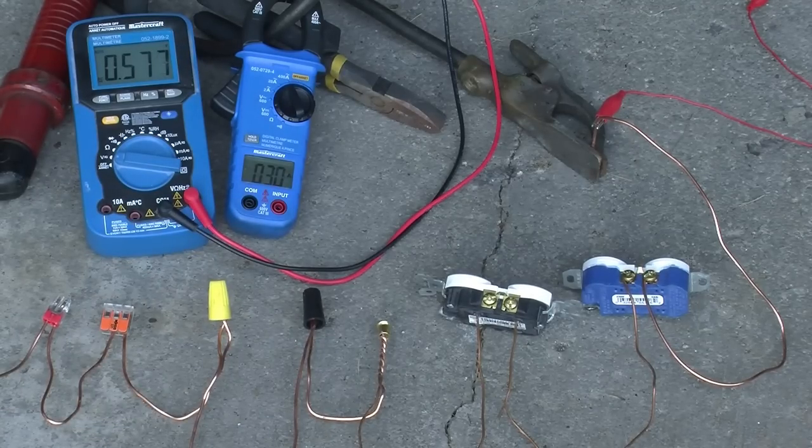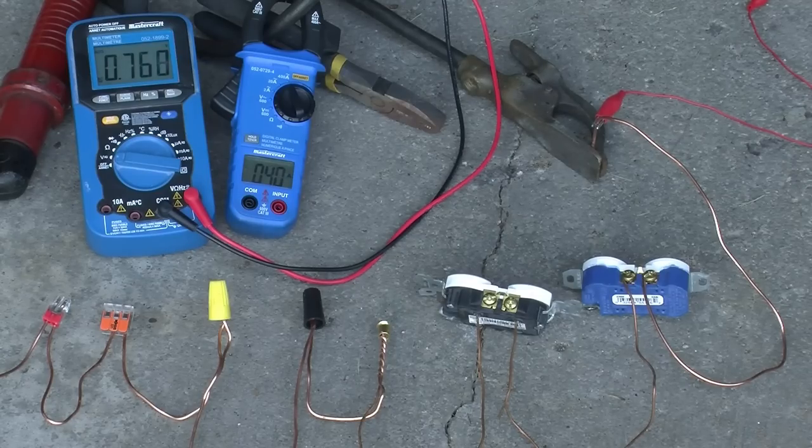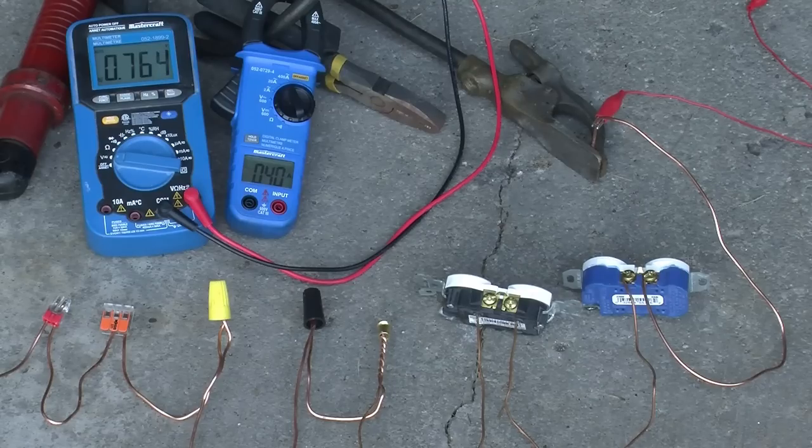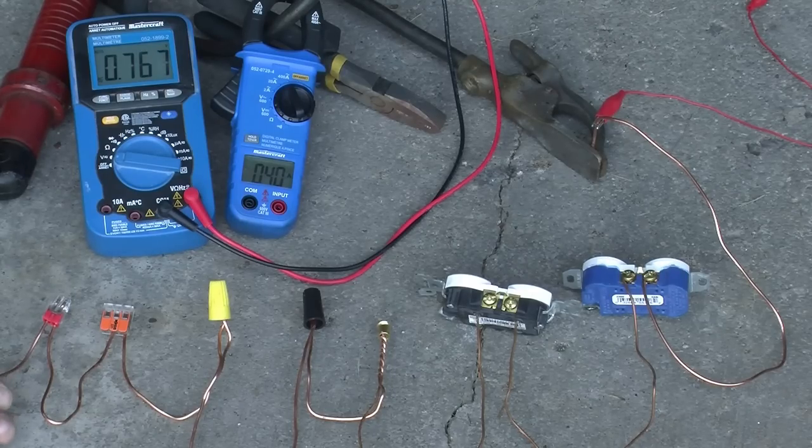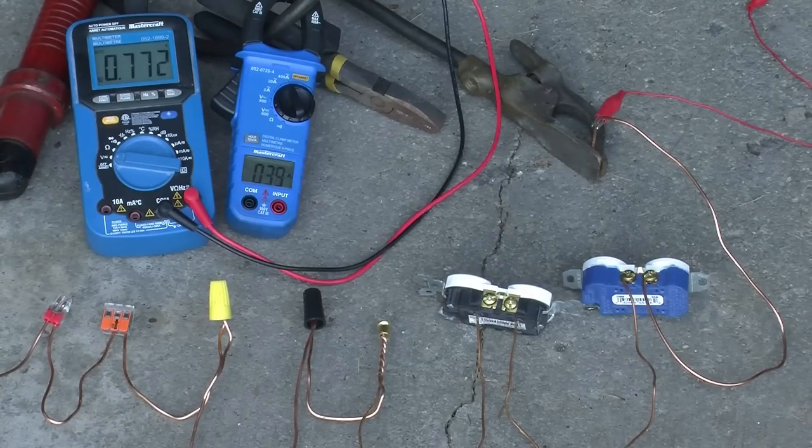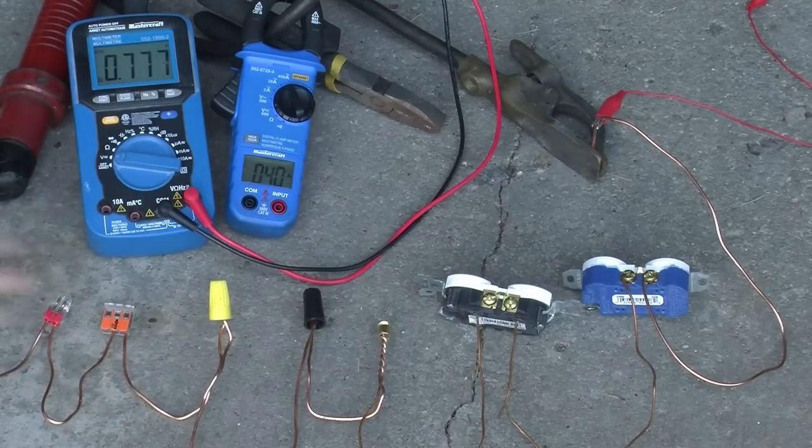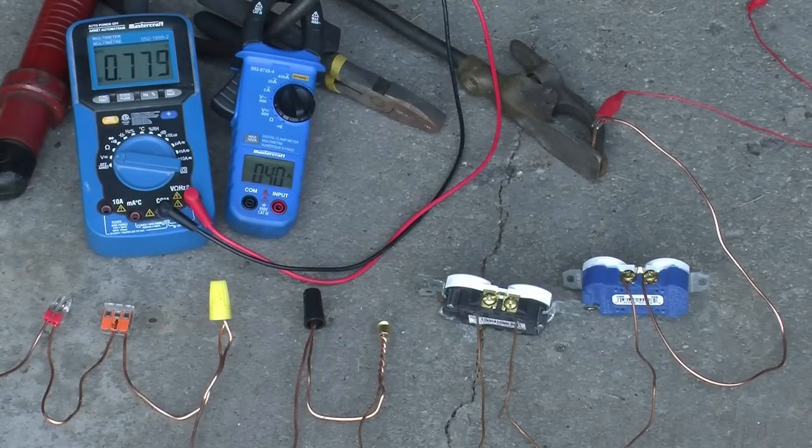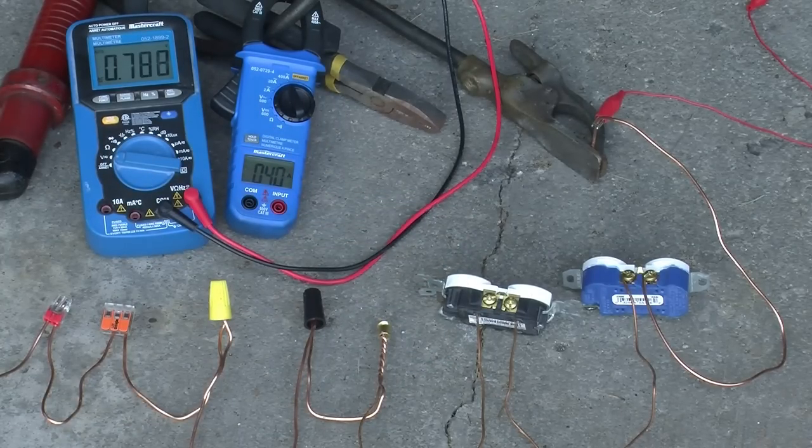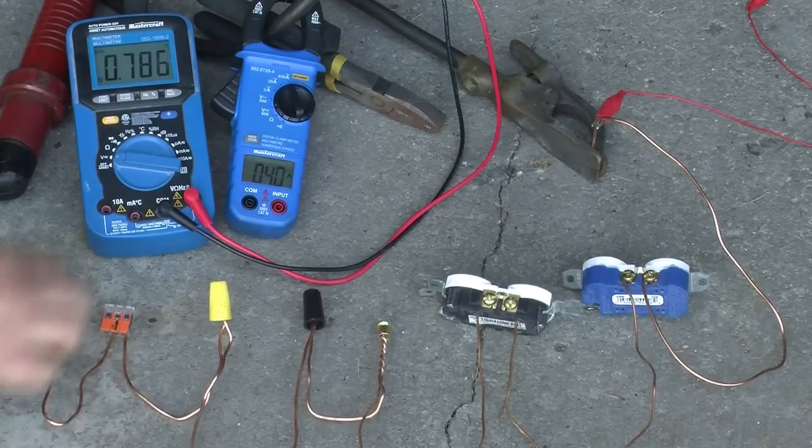So let's crank it up to 40 amps now. I can hear the arc welder humming. So at 40 amps we've got about three quarters of a volt, so it means we're dissipating 30 watts across here. So maybe about 4 watts per section.